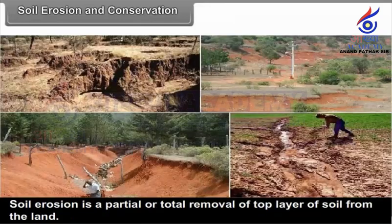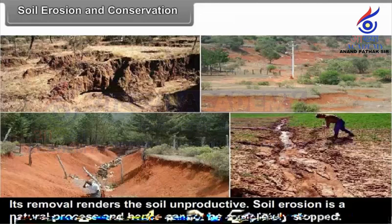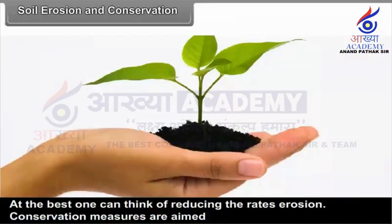Soil erosion is a partial or total removal of the top layer of soil from the land. It is the top layer of the soil that contains the organic matter and nutrients and promotes the growth of vegetation. Its removal renders the soil unproductive. Soil erosion is a natural process and hence cannot be completely stopped. At best, one can think of reducing the rates of erosion.